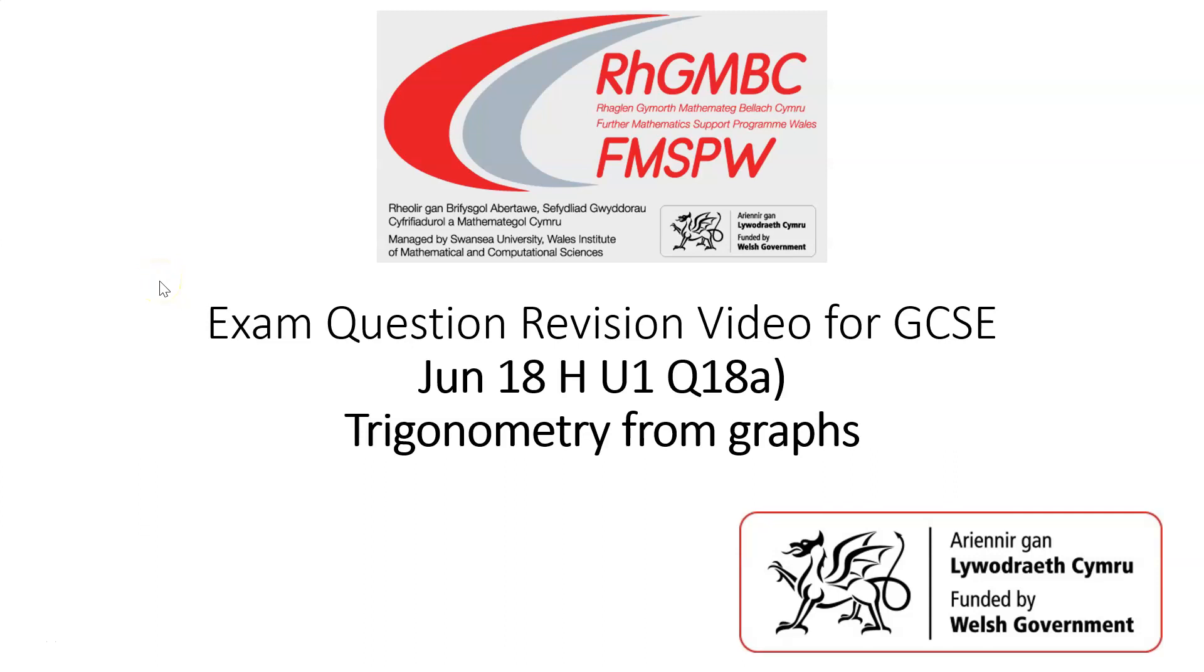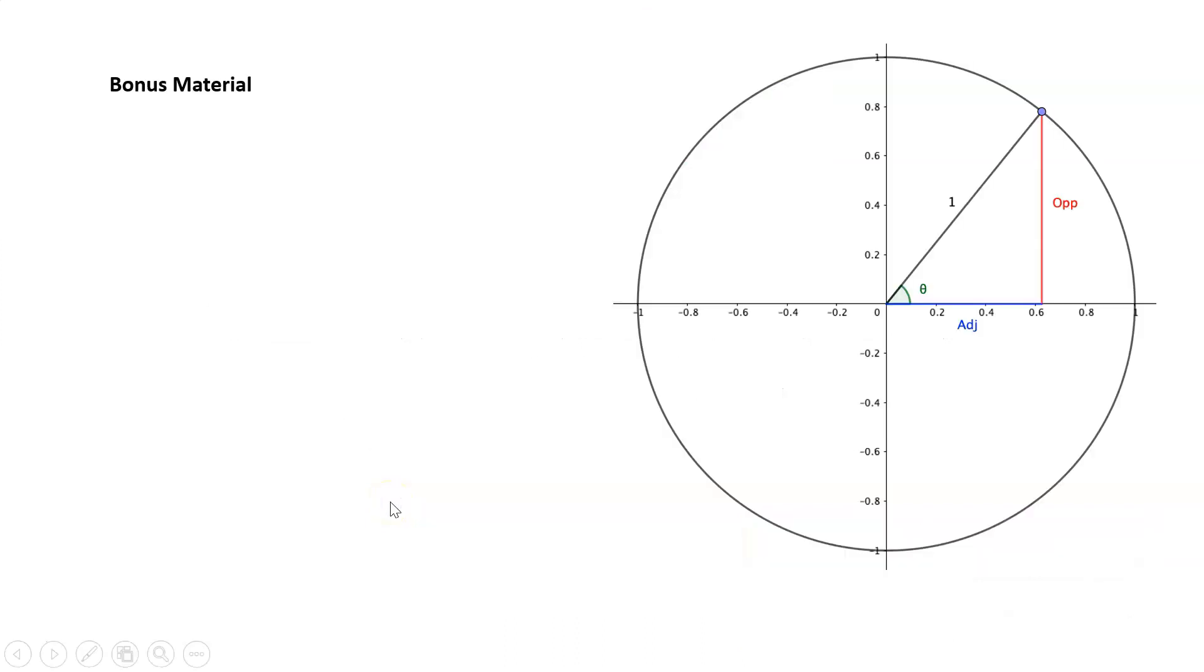Exam question revision video for GCSE Higher tier, unit 1, question 18a, which is on trigonometry from graphs. Let's have a look at the bonus material first.